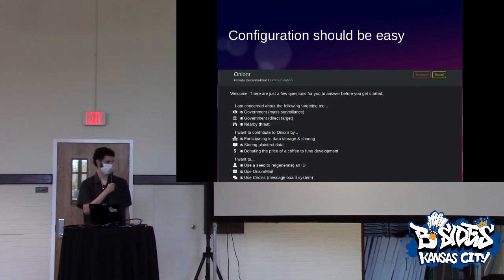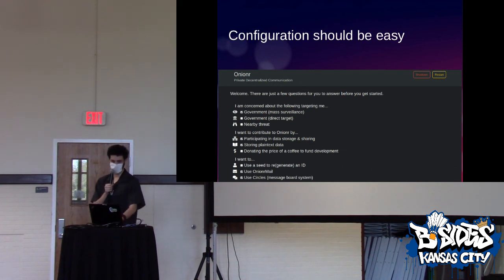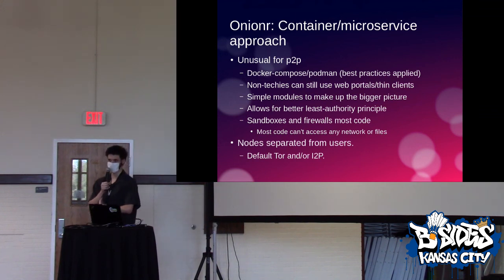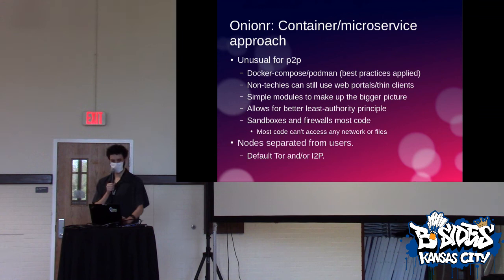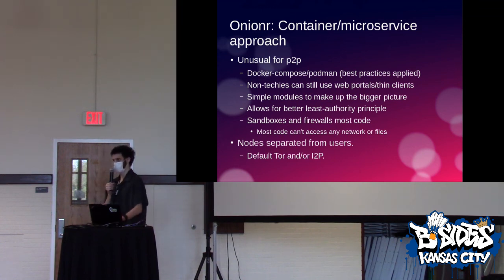I've created a pretty straightforward onboarding process that helps you pick your settings based on your threat model and what you want to do, and it sets up consent for how your device should be used in the network. I've used a container and microservice approach, which is in opposition to all the other networks I talked about today. So instead of a big monolithic codebase, I have a bunch of small projects that kind of fit together like Legos — similar to how a lot of companies deploy their complex services today. That makes it a little more complicated for someone to set up, but I'm thinking about making thin clients that people can connect to, to get the best of both worlds.